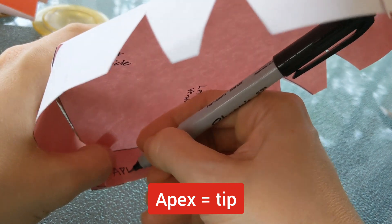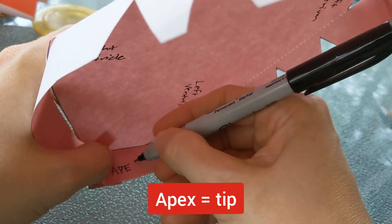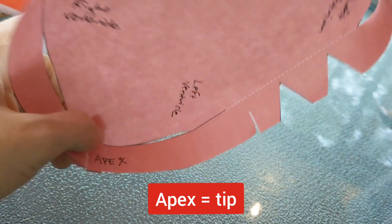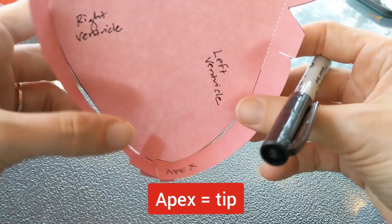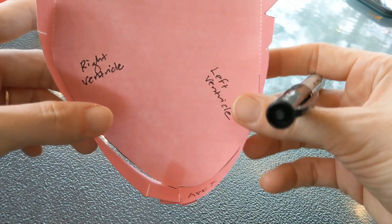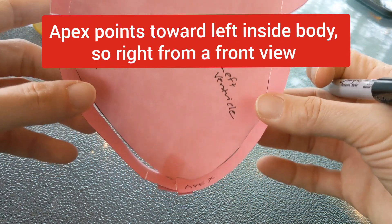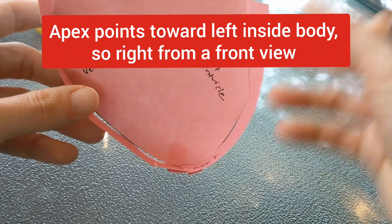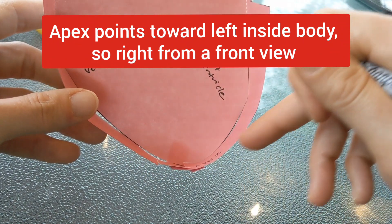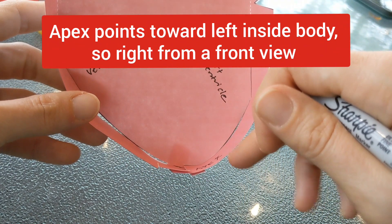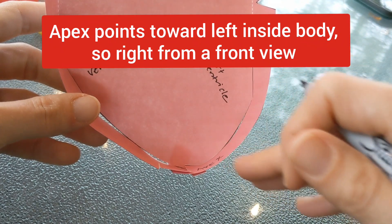Apex means point or tip. So for instance on a mountain the peak of the mountain is also known as the apex. And the tip of the heart always points toward the left hand side. So that's one way to differentiate when you have a heart in front of you that you're dissecting. If you lay it down the left side of the heart is going to have the apex which means it's pointing to your right.